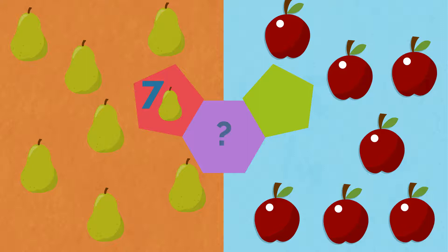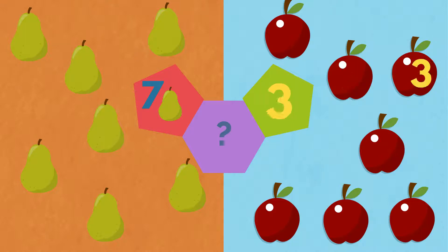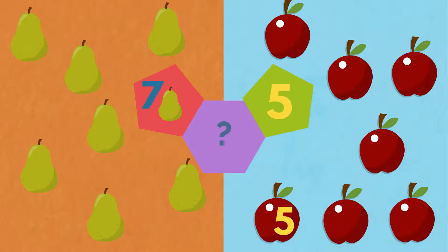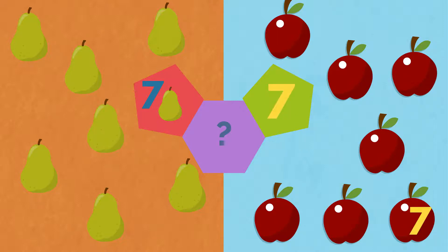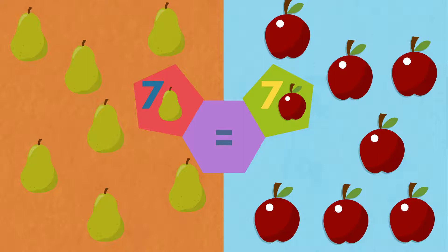Seven pears. One. Two. Three. Four. Five. Six. Seven. Seven apples. Seven is the same as seven.